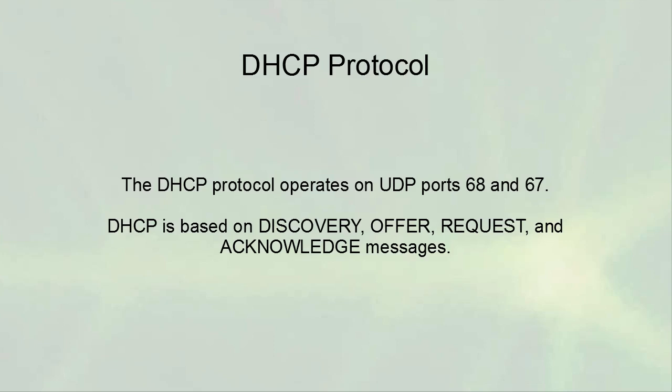What happens is a client comes online and sends out a DHCP Discover packet. A DHCP server, assuming it sees the packet, will then send a DHCP Offer, offering an IP address the client could potentially use. The client collects all the offers it receives, decides which one to accept — usually the first one — and then sends a Request to that specific DHCP server.